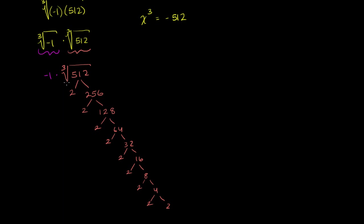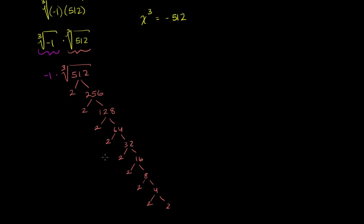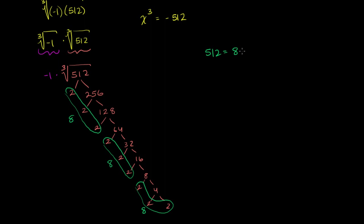That gives us a clue about the cube root. We can find 3 groups of three 2's: one group, two groups, and three groups. Each group of 2 times 2 times 2 equals 8. So we can write 512 as 8 times 8 times 8, and rewrite the expression as the cube root of 8 times 8 times 8.